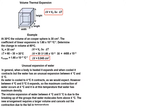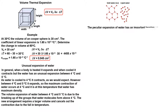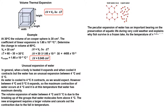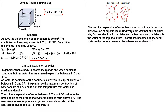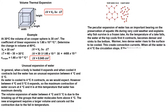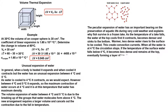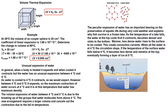The new molecular arrangement requires a larger volume, cancelling the contraction due to falling temperature. The peculiar expansion of water has an important bearing on the preservation of aquatic life during very cold weather and explains why fish survive in a frozen lake. As the temperature of a lake falls, the water at the top cools first, contracts, becomes denser, and sinks to the bottom. Warm, less dense water rises to the surface to be cooled, creating convection currents. When all the water reaches 4 degrees Celsius, circulation stops. If the surface water temperature falls below 4 degrees Celsius, it becomes less dense and remains at the top, eventually forming a layer of ice at 0 degrees Celsius.